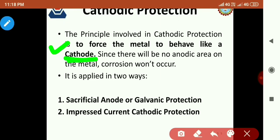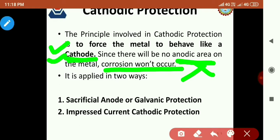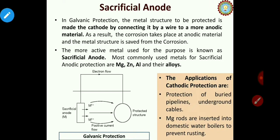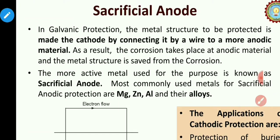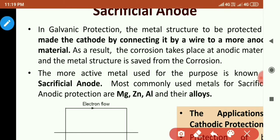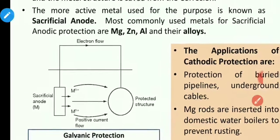In galvanic protection, the metal structure to be protected is made the cathode. We force the metal to behave like a cathode by connecting it via a wire to a more anodic, highly reactive metal. We combine it with this active metal using an insulated wire.